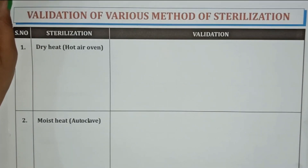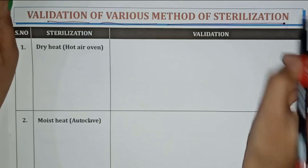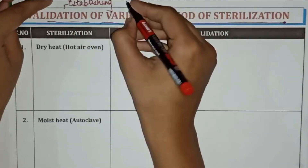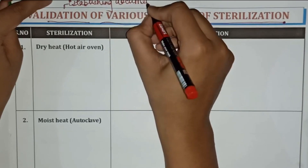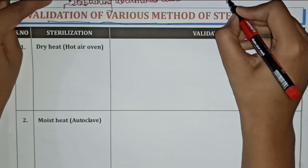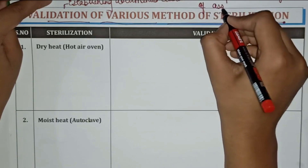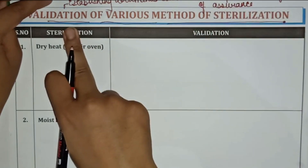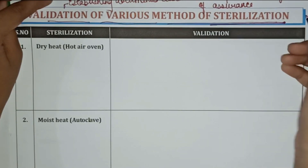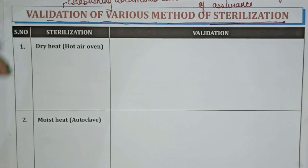Today in this video we will discuss about validation of various methods of sterilization. Validation means establishing documented evidences which provide a degree of assurance. Sterilization is a process of complete removal of bacteria or other kinds of living microorganisms.